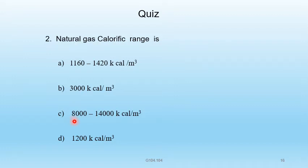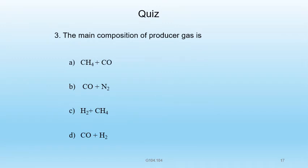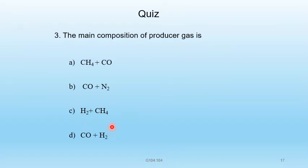Question 3 — The main composition of producer gas is: A) CH4 + CO, B) CO + N2, C) H2 + CH4, D) CO + H2. CO + H2 is water gas. The main composition of producer gas is CO + N2, so B is the correct answer.